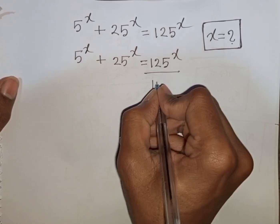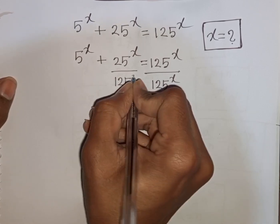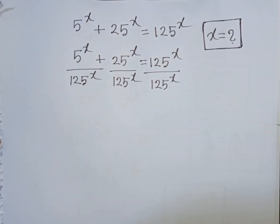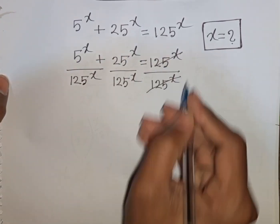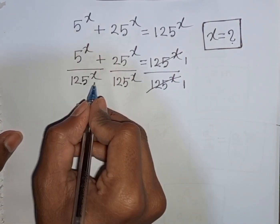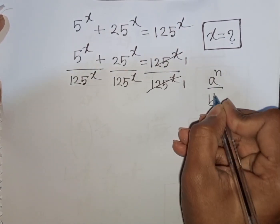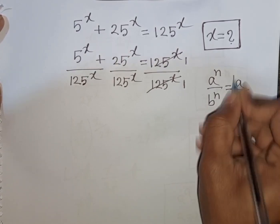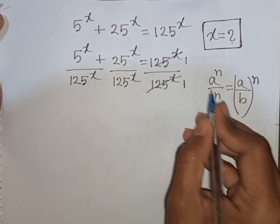After dividing by 125^x, the 125^x terms cancel. We notice the same power x but different bases. Remember the formula: a^n / b^n = (a/b)^n — that is, same power but different base.